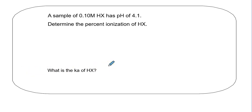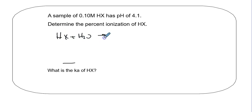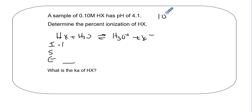Let's try another example. We have a 0.1 molar sample with a pH of 4.1 - determine the Ka. Setting up: HX + H2O yields H3O+ plus X-. ICE table with initial 0.1 for HX and zero for products. From the pH: 10 to the negative 4.1 gives us the H3O+ concentration, so using the calculator: 10⁻⁴·¹ equals 7.9×10⁻⁵.